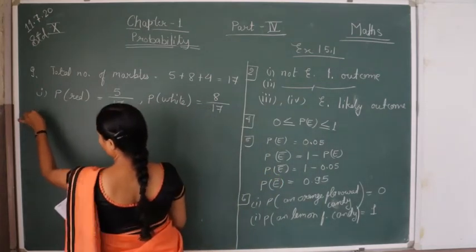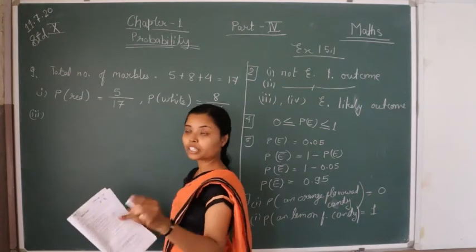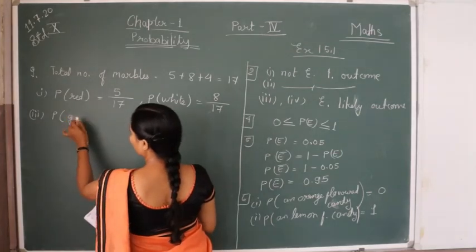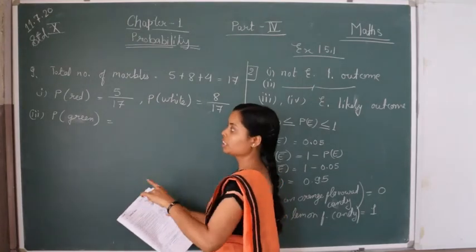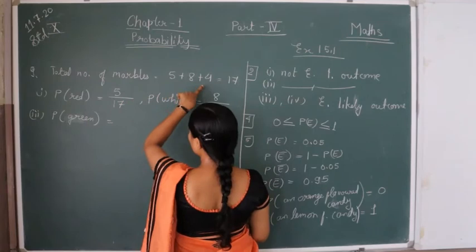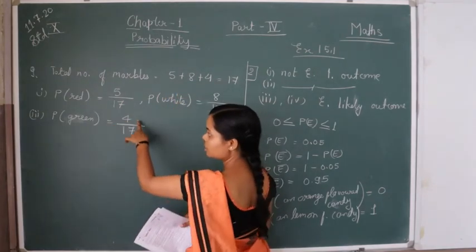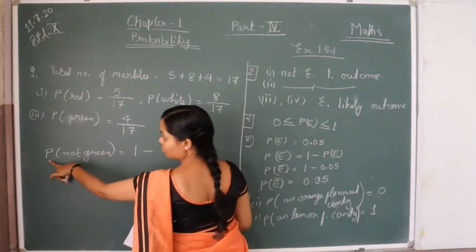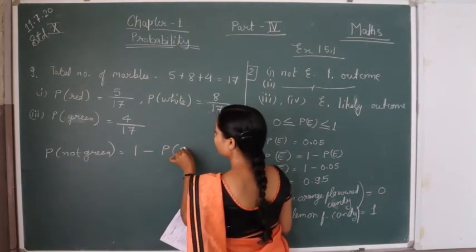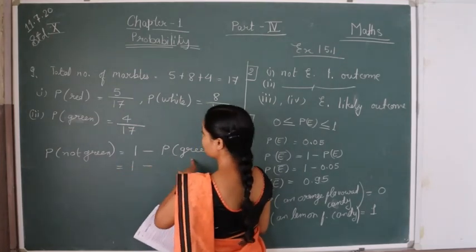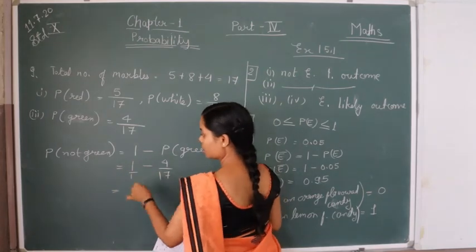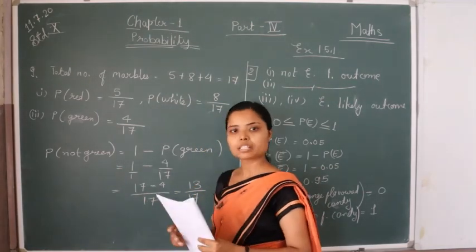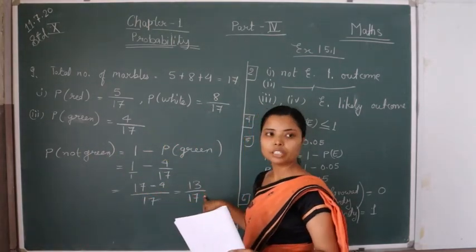Next, the probability of not getting a green marble: first we find the probability of getting a green marble — there are 4 green marbles and 17 possible outcomes, so P(green) = 4/17. Then P(not green) = 1 − P(green) = 1 − 4/17 = (17 − 4)/17 = 13/17. So the probability of getting a not-green marble is 13/17.